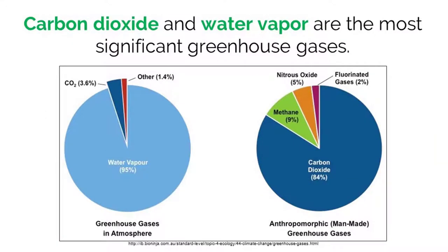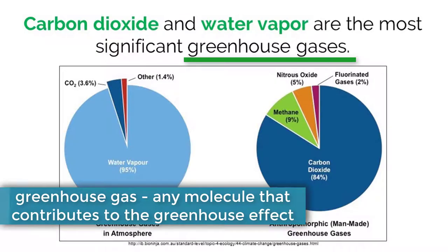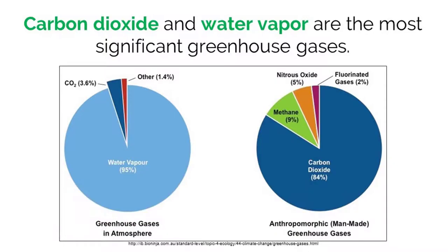To understand climate change, we first need to understand an important concept that is essential for its explanation. This is the concept of a greenhouse gas. A greenhouse gas is any type of molecule that has the ability to contribute to the greenhouse effect. These molecules have the ability to absorb radiation or heat from the sun and hold it in our atmosphere. Because they are absorbing heat and not allowing it to leave, our Earth gets warmer.